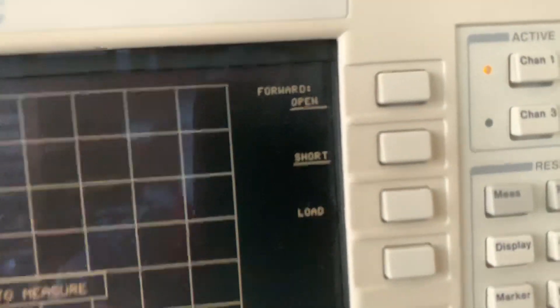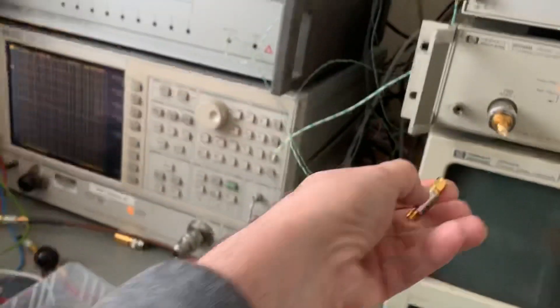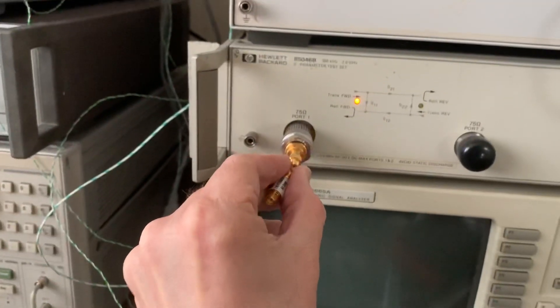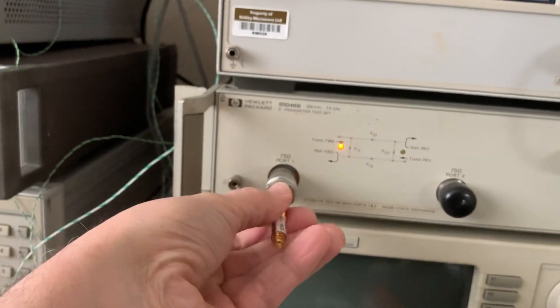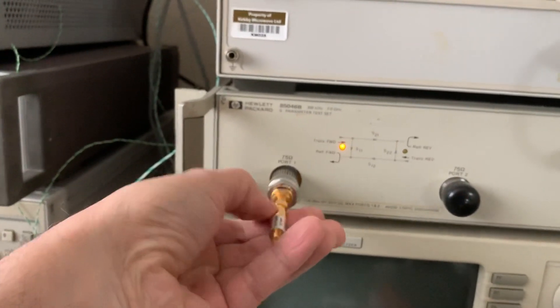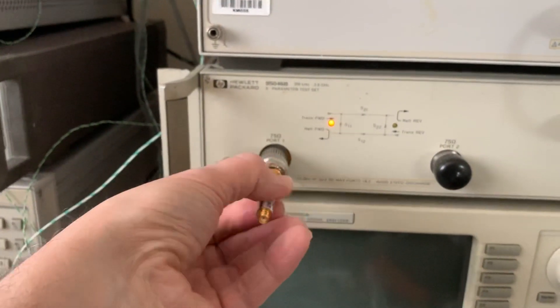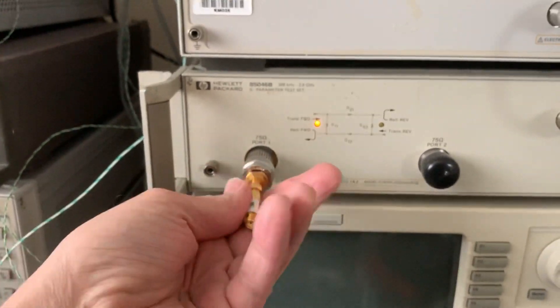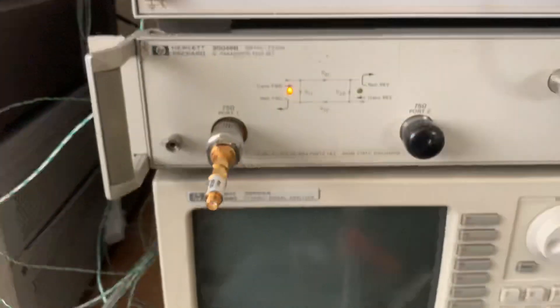Now it's a load, so we're going to take an attenuator. Since I've got connector savers and these are scrap-ish components, I'm not worried about rotating the threads. I wouldn't normally do that, so that we're going to use as a load.